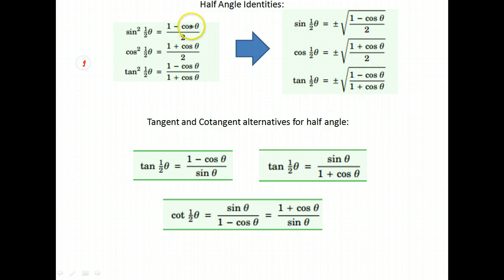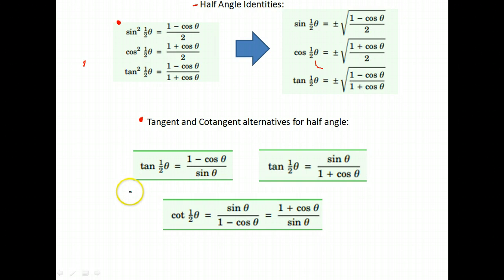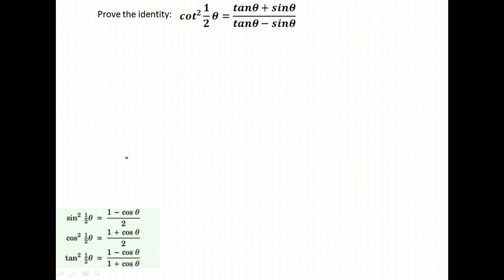We're going to go over some identities using the half-angle identities. Here are our half-angle identities. If we take the square root of both sides, we also get this set. There are also some additional alternatives for tangent and cotangent for their half-angle identities, shown right down here. You should have those in your notes. We're going to use those to verify or prove some identities.